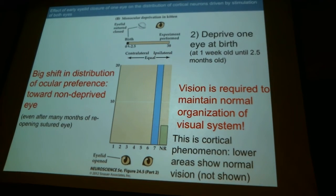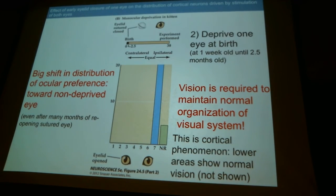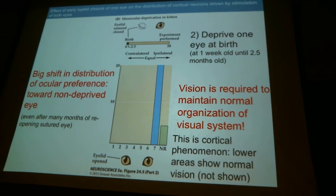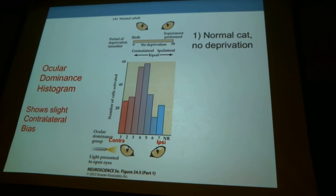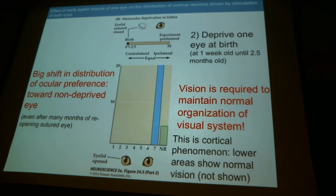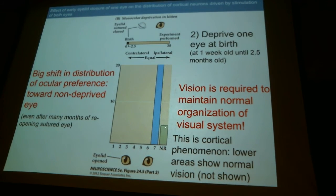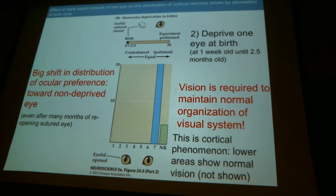If you record from the LGN or the retina, those retinal ganglion cells are normal — they respond normally. It's the connection between the LGN and the cortex that's been disrupted. The scale of these histograms shows that of all the cells recorded, they were all ipsilateral non-deprived sensitive, none responding to the deprived eye. If you repeat this deprivation later — waiting until 12 months when the animal is essentially an adult, covering one eye, then opening it and testing — you do get a shift, but it's a much smaller shift. The conclusion is that the plasticity responsible for forming these circuits means the juvenile cortex is much, much more plastic than the adult cortex.